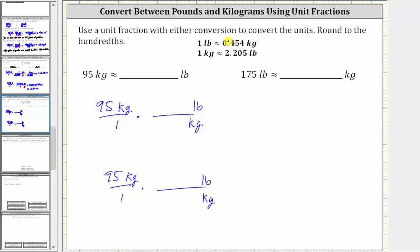If we use the first conversion of one pound is approximately 0.454 kilograms, one possible unit fraction is one pound over 0.454 kilograms. If we use the second conversion of one kilogram is approximately 2.205 pounds, a second possible unit fraction would be 2.205 pounds over one kilogram. Notice in both cases, we have kilograms divided by kilograms, and therefore the units of kilograms simplify out, leaving us with pounds.